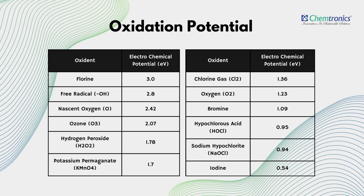Oxidation potential of the different oxidants: Fluorine has 3.0 electron volts. Free OH radicals have 2.8. Nascent oxygen has 2.42. Ozone has 2.07. Hydrogen peroxide has 1.78. Potassium permanganate has 1.7. Chlorine gas has 1.36. Oxygen has 1.23. Bromine has 1.09. Hypochlorous acid has 0.95. Sodium hypochlorite has 0.94. Iodine has 0.54 electron volts.